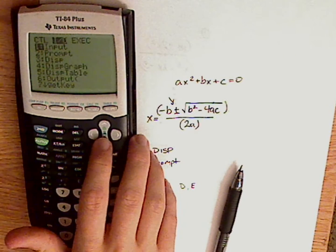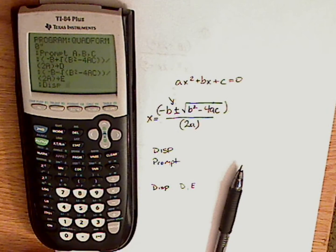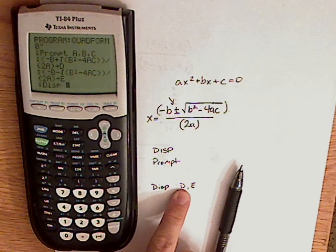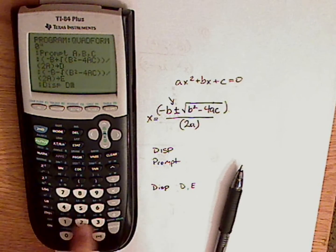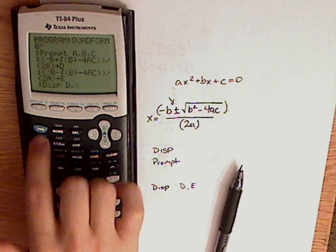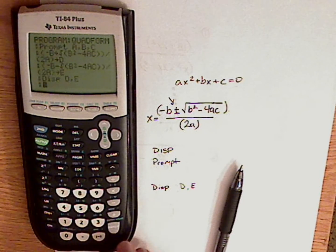Okay, so go to program, go to I/O, display. Now this time, do not use parentheses, just type in D, comma, E. Comma, E. Enter.